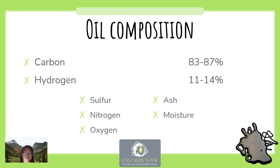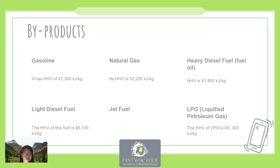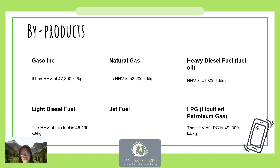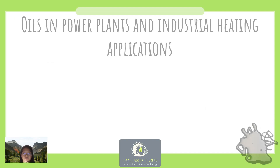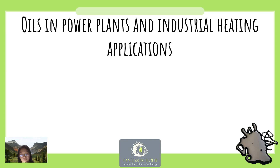Oil is mainly composed of hydrocarbons (carbon and hydrogen), with the rest being sulfur, hydrogen, oxygen, ash, and moisture. Byproducts of oil refinery plants include gasoline, natural gas, heavy diesel fuel, light diesel fuel, jet fuel, and LPG (liquefied petroleum gas). Gasoline and light diesel fuels are used to operate automobiles. Since diesel fuel contains some sulfur, US and EU regulations limit sulfur content from 300 parts per million to 10 parts per million. Oils are not usually used for electricity generation but can still be used in power plants and industrial heating.